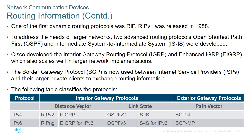For distance vector protocols, we have RIP version 2, EIGRP, RIP next generation, and EIGRP for IPv6. For link state, we have OSPF version 2 and OSPF version 3. OSPF version 2 works with IPv4, while OSPF version 3 works with IPv6.